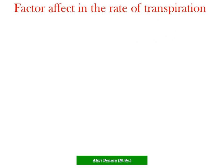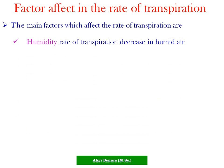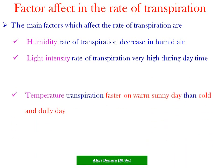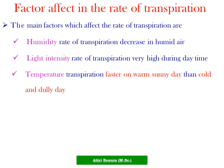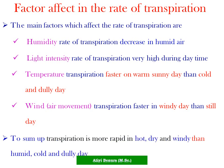The factors affecting the rate of transpiration are: humidity — rate of transpiration decreases in humid air; light intensity — rate of transpiration is very high during daytime; temperature — transpiration is faster on a warm sunny day than a cold and cloudy day; wind or air movement — transpiration is faster on a windy day than a still day. To summarize, transpiration is more rapid in hot, dry, and windy conditions than in humid, cold, and cloudy conditions.